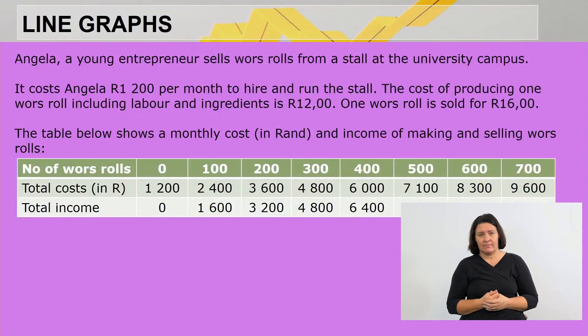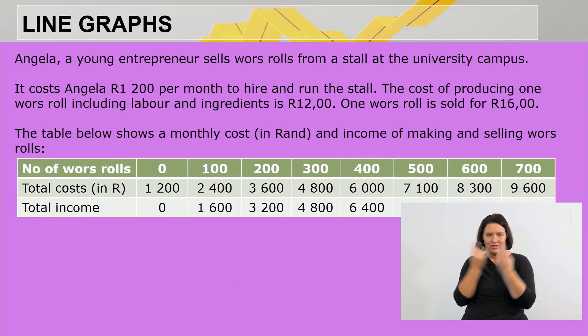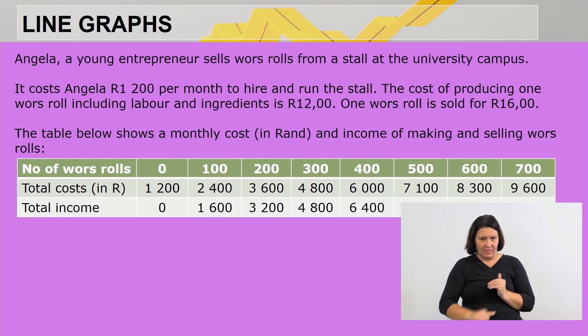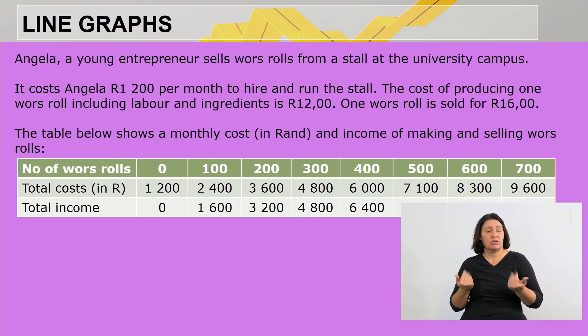Let's look at the first question. Angela is a young entrepreneur and she sells wors rolls from a stall at university campus. It costs Angela R1,200 per month to hire and run the stall. That's a fixed cost. The cost of producing one wors roll including labor and ingredients is R12. One wors roll is sold for R16.